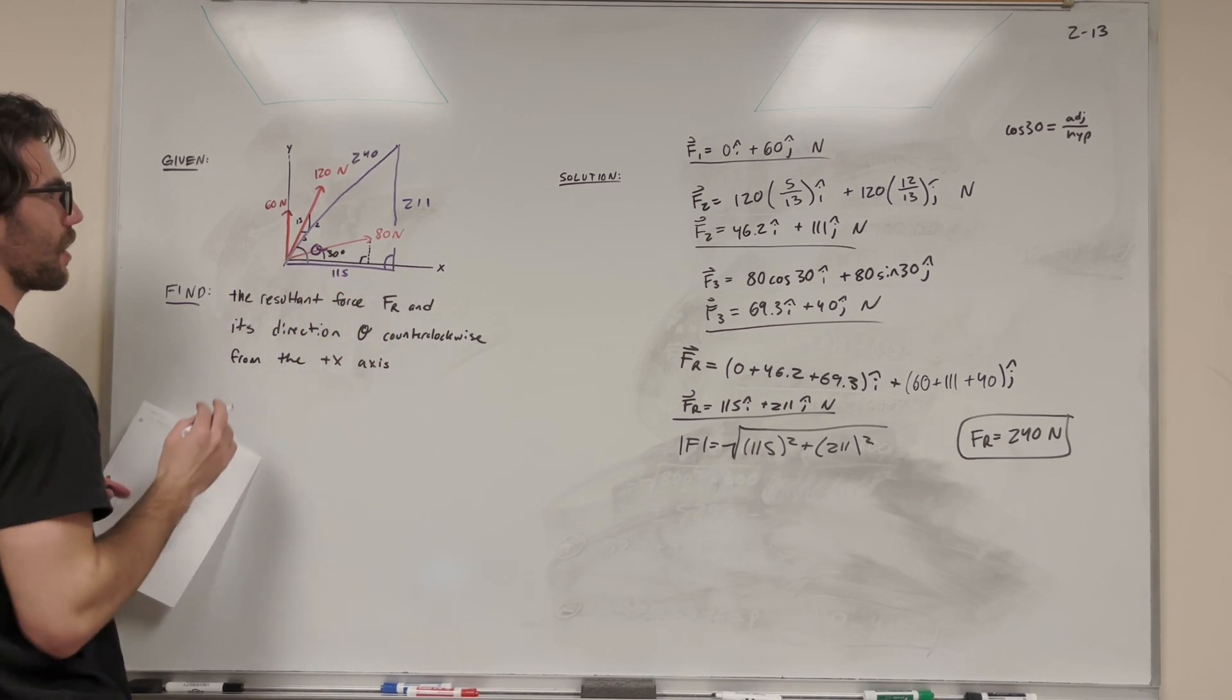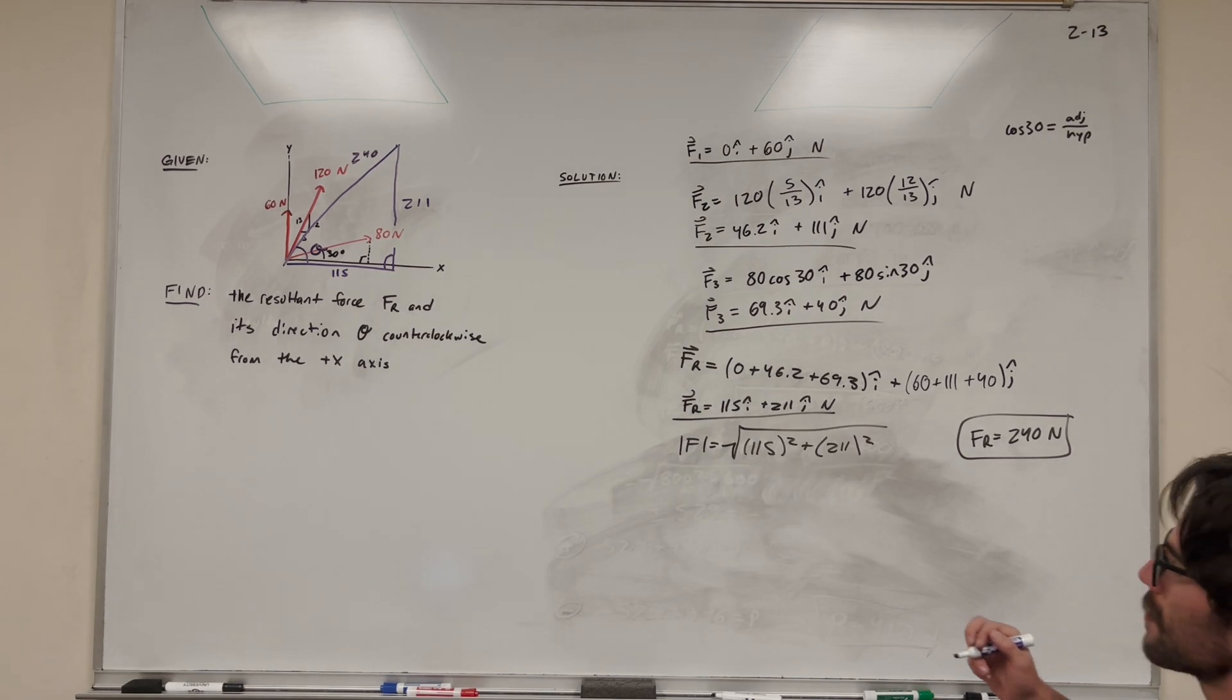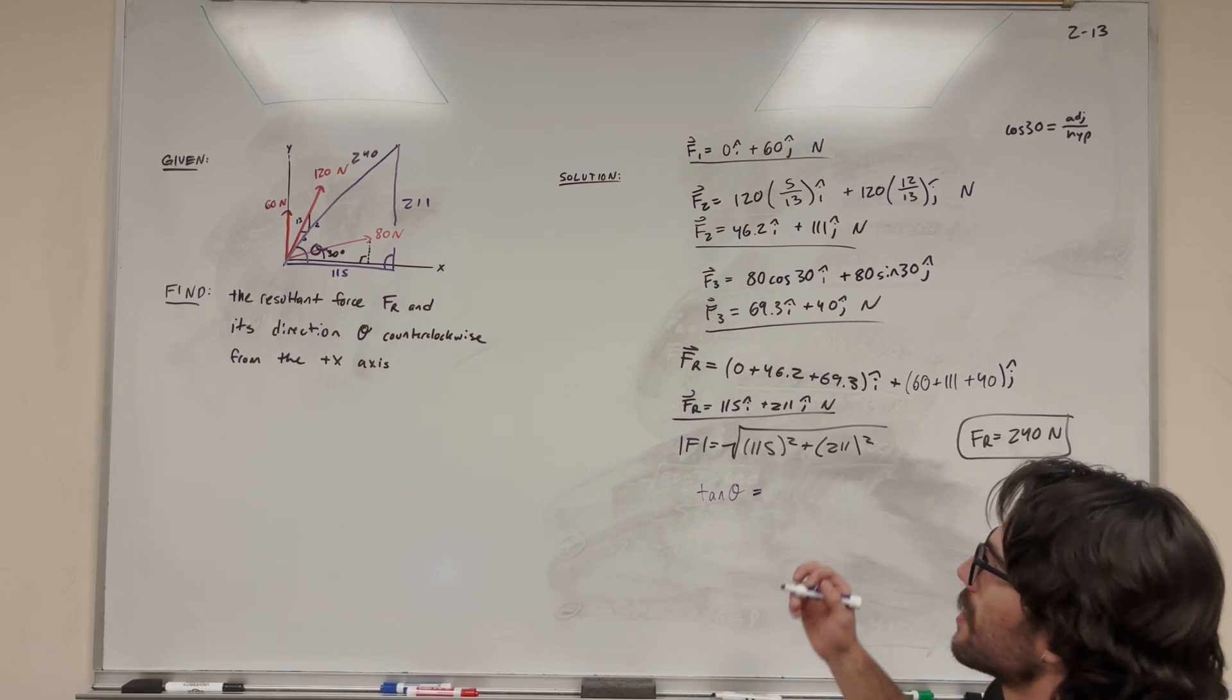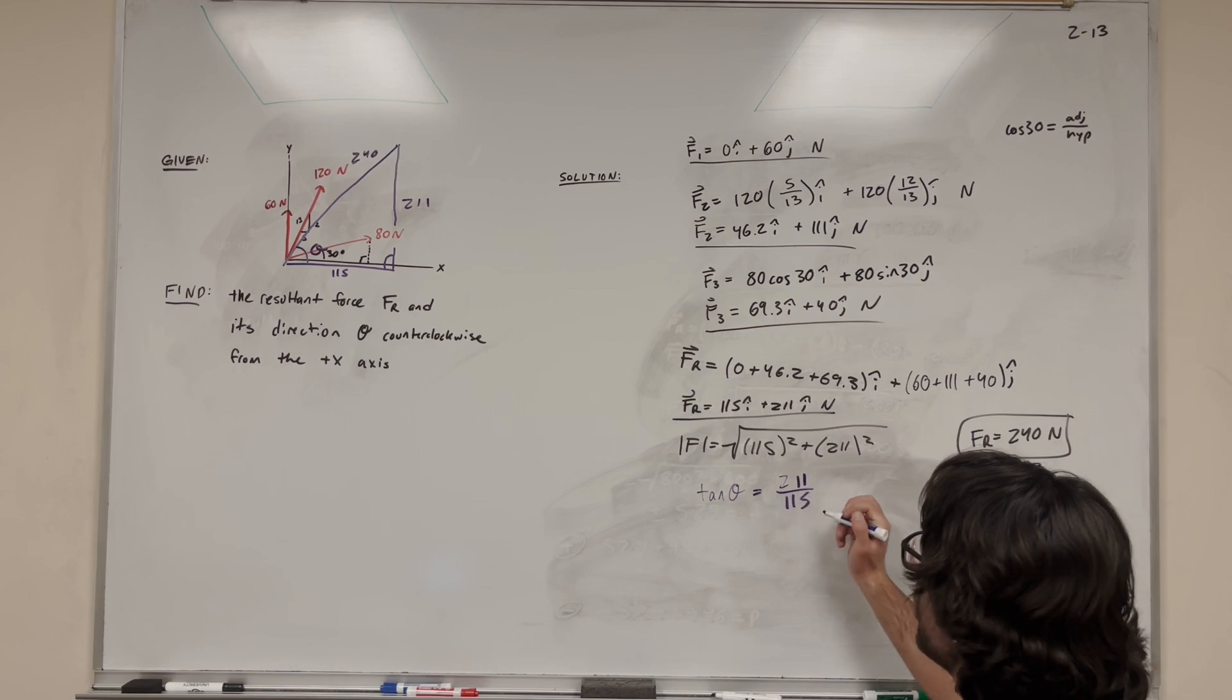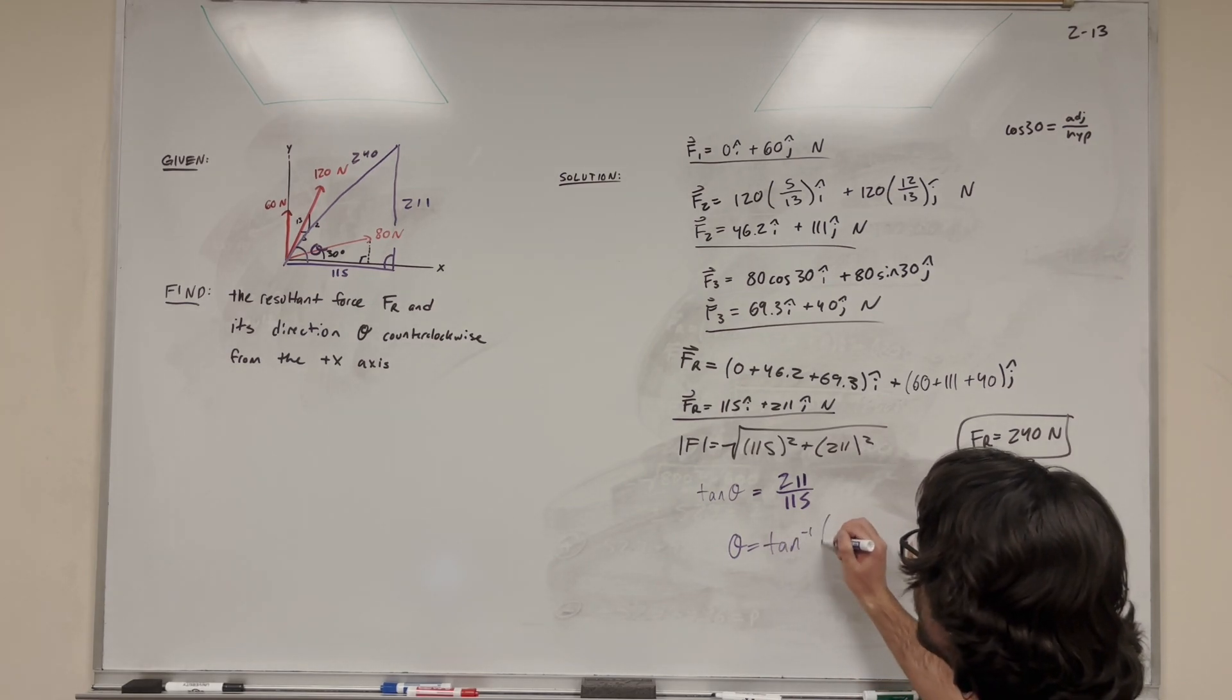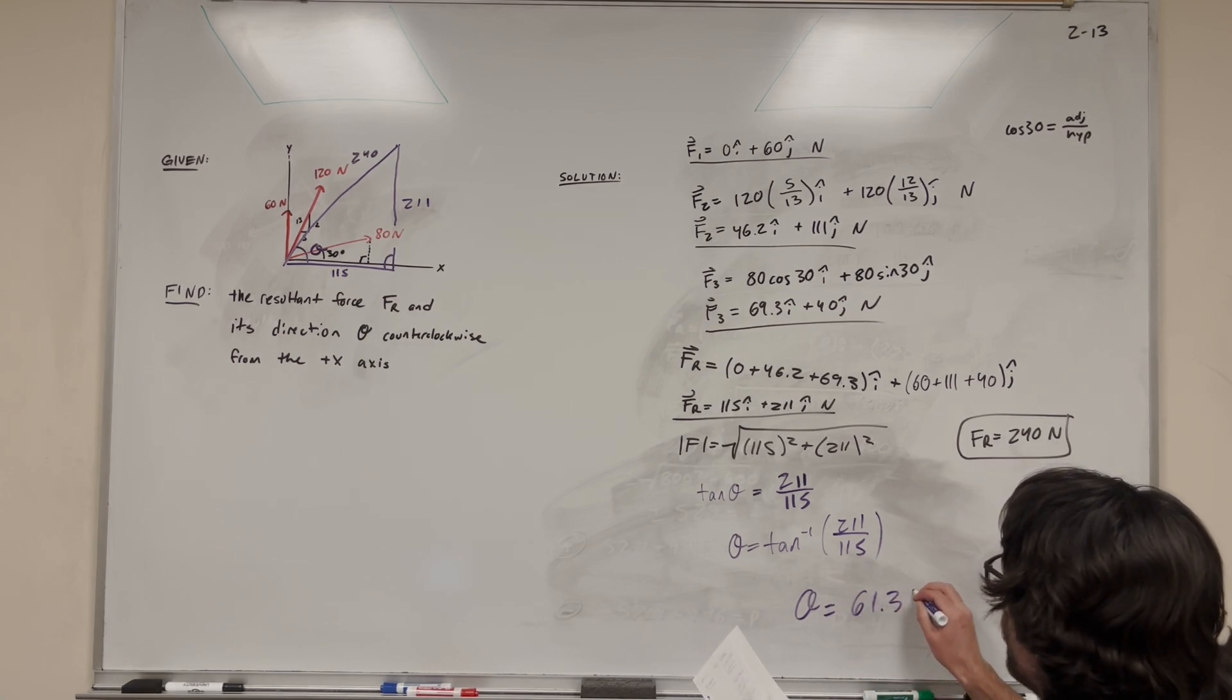So there's three ways we could do it. We can use sine, cosine, or tangent. Let's use tangent because that's the most common one that I like to use. So if we say tangent of Theta, this is Theta's what we're solving for. Tangent is opposite over adjacent. So we're going to add 211 over 115. Now we can take inverse tangent, so Theta is equal to inverse tangent of 211 over 115. And then just plugging that into your calculator, you get 61.3 degrees. And those are our answers for this problem.